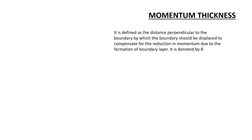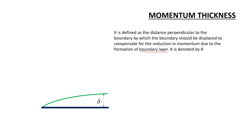Momentum thickness is defined as the distance perpendicular to the boundary by which the boundary should be displaced to compensate for the reduction in momentum due to the formation of the boundary layer. It is denoted by theta. Now, we consider a flat plate with a boundary layer within the thickness delta at the trailing edge, with sections 1 and 2.